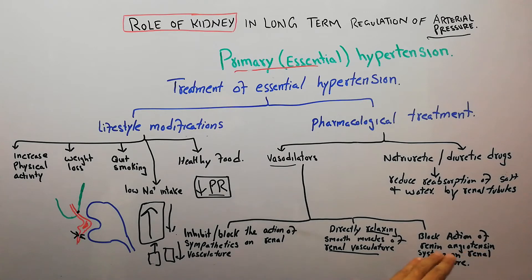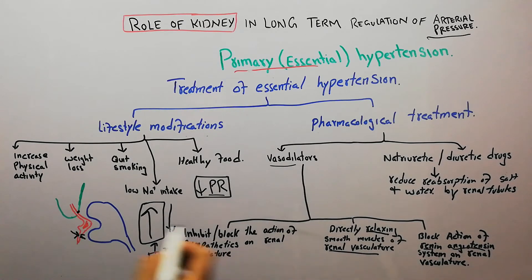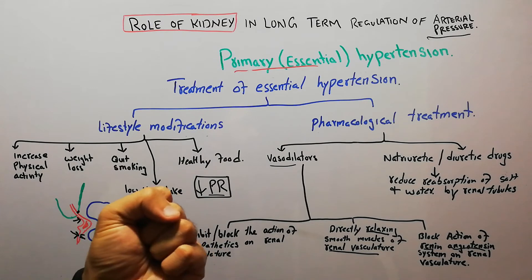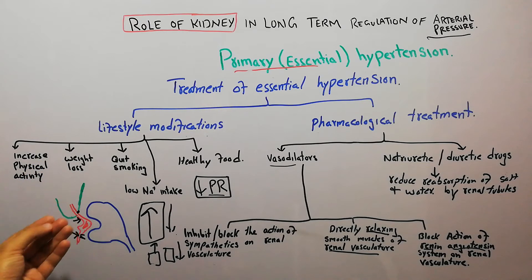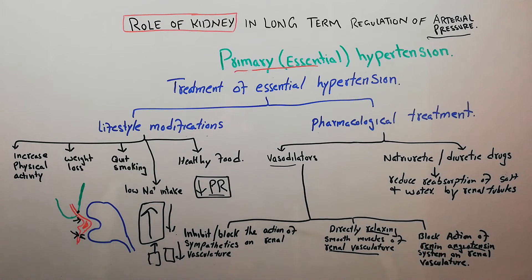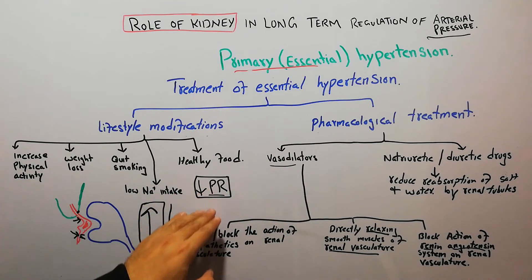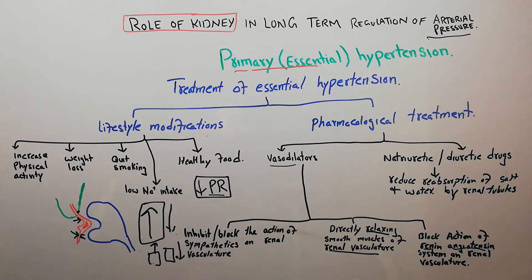Some vasodilator drugs block the action of the renin-angiotensin system on the renal vasculature. Renin and angiotensin cause vasoconstriction, so by blocking the renin-angiotensin system, vasoconstriction is prevented and accumulation of salt and water is blocked. This leads to vasodilation, decreased peripheral resistance, decreased cardiac output, a fall in arterial pressure, and helps in the treatment of hypertension.